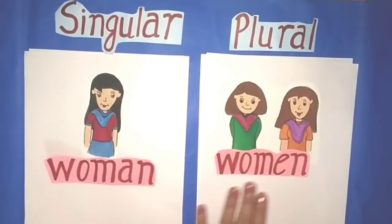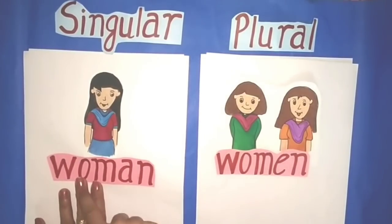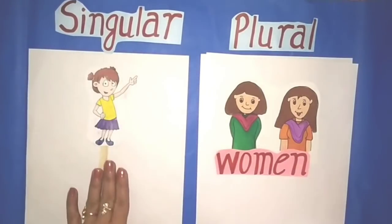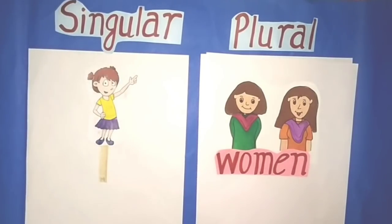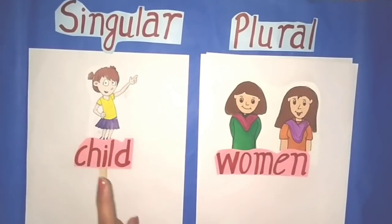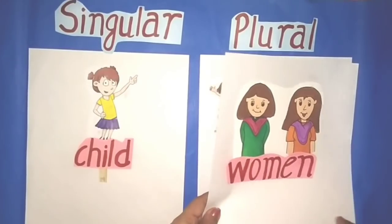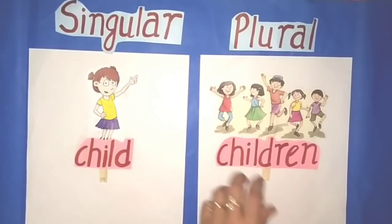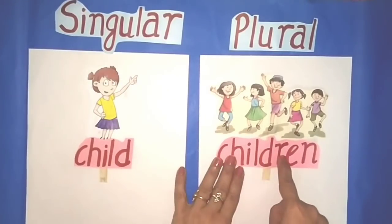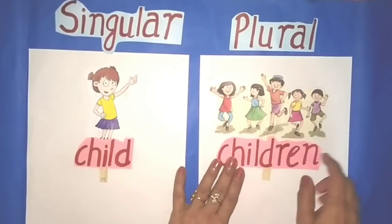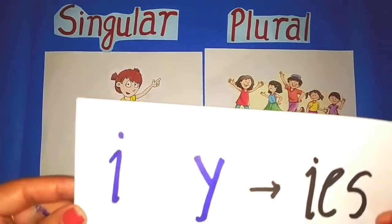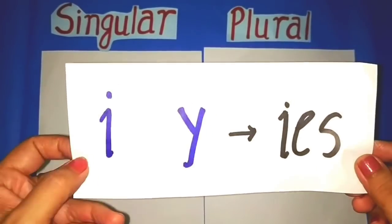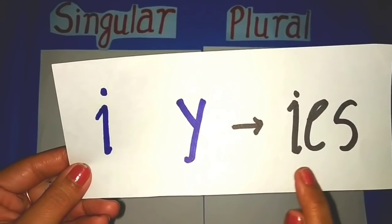Similarly, students, for woman we will write women. Man, men; woman, women. Here you can see a child — one child — and for more than one child we will write children. Child, children.